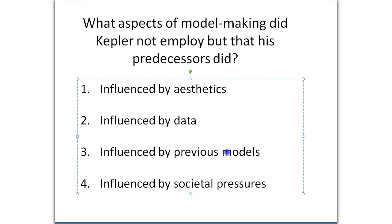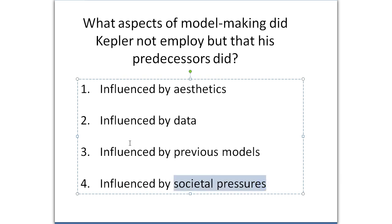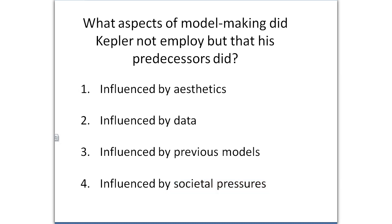Kepler was definitely influenced by previous models. It helped that Copernicus had come up with a heliocentric model prior to Kepler, because it made it easier for him to look at that research and formulate his idea of elliptical orbits with the sun at the center. One area where he wasn't as influenced as many of his peers was societal pressure. There was still a taboo on the heliocentric model and on using anything but circles, yet he really went against a lot of the prevailing ideas in terms of making a model.